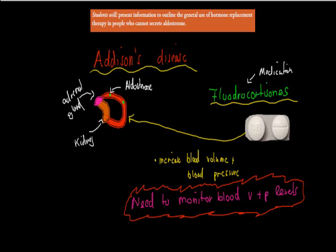This dot point says: present information to outline the general use of hormone replacement therapy in people who cannot secrete aldosterone. Addison's disease is the condition where people cannot secrete aldosterone. The adrenal gland, situated above the kidney, produces aldosterone, but in Addison's disease the adrenal gland doesn't work properly, so no aldosterone is produced — meaning we can't regulate blood pressure or blood volume. Instead, we can take a medication called fludrocortisone, which is absorbed into the bloodstream and does exactly the same thing as aldosterone — it increases blood volume and blood pressure, basically replacing it almost one for one.